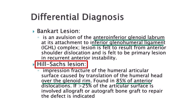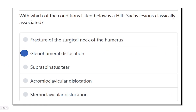In about 85% of cases, it is associated with anterior dislocation. On the other hand, the Bankart lesion involves the antero-inferior glenoid labrum — it is the inferior part. This is an important distinction for answering the question.